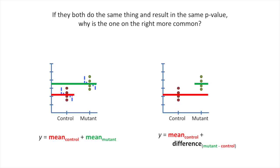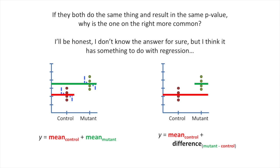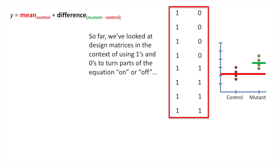If they both do the same thing and give the same p-value, why is the one on the right more common? Honestly, I don't know for sure, but I think it has something to do with regression. So far we've looked at design matrices in the context of using ones and zeros to turn parts of the equation on or off. Let's take a step back and remember how it works.